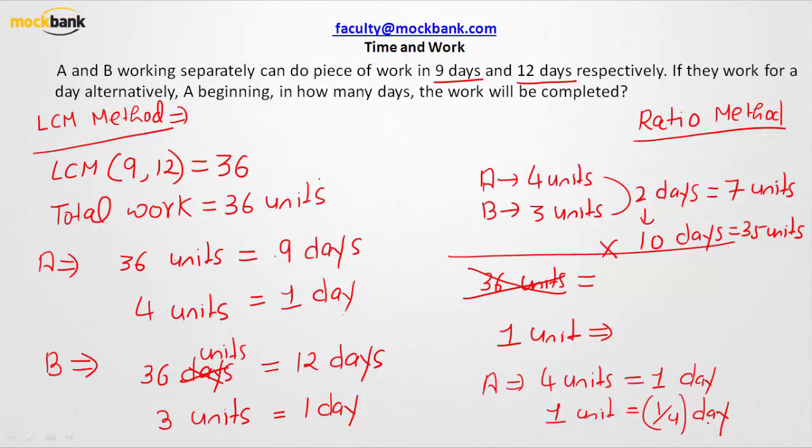Since we have already seen that A and B together are taking 10 days to finish 35 units of work, another 1 unit of work will get completed by A in one-fourth day. So total days will be 10 plus 1 over 4, which comes out as 41 over 4 days, or 10.25 days, or 10 and 1 over 4. All of them are correct.